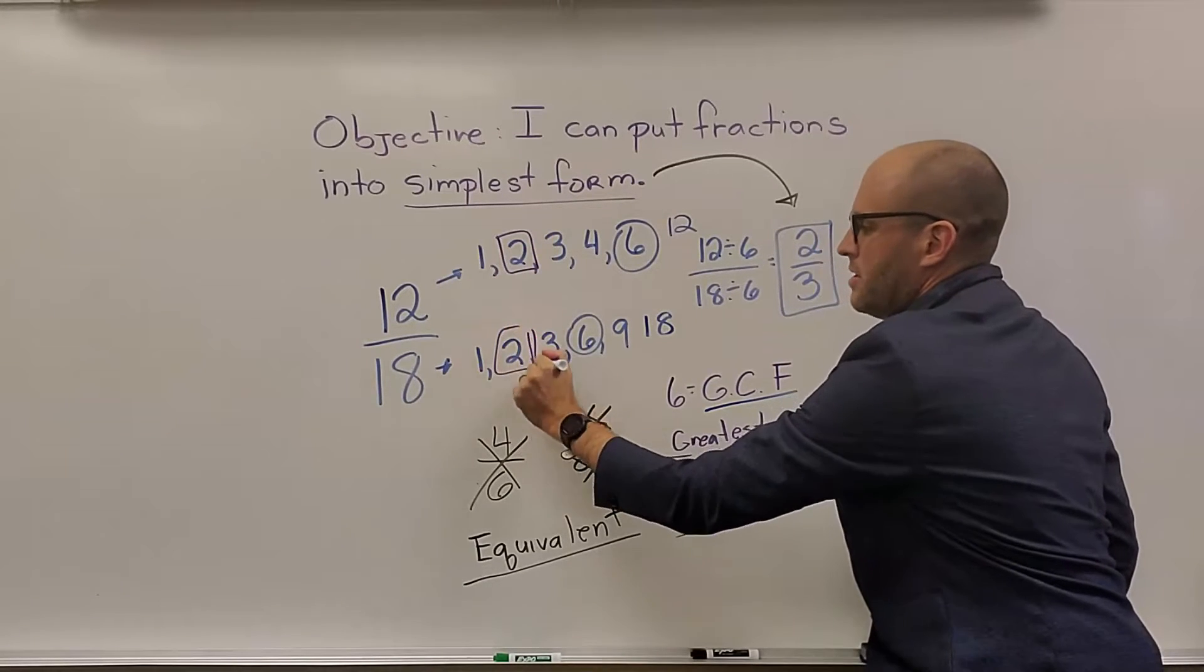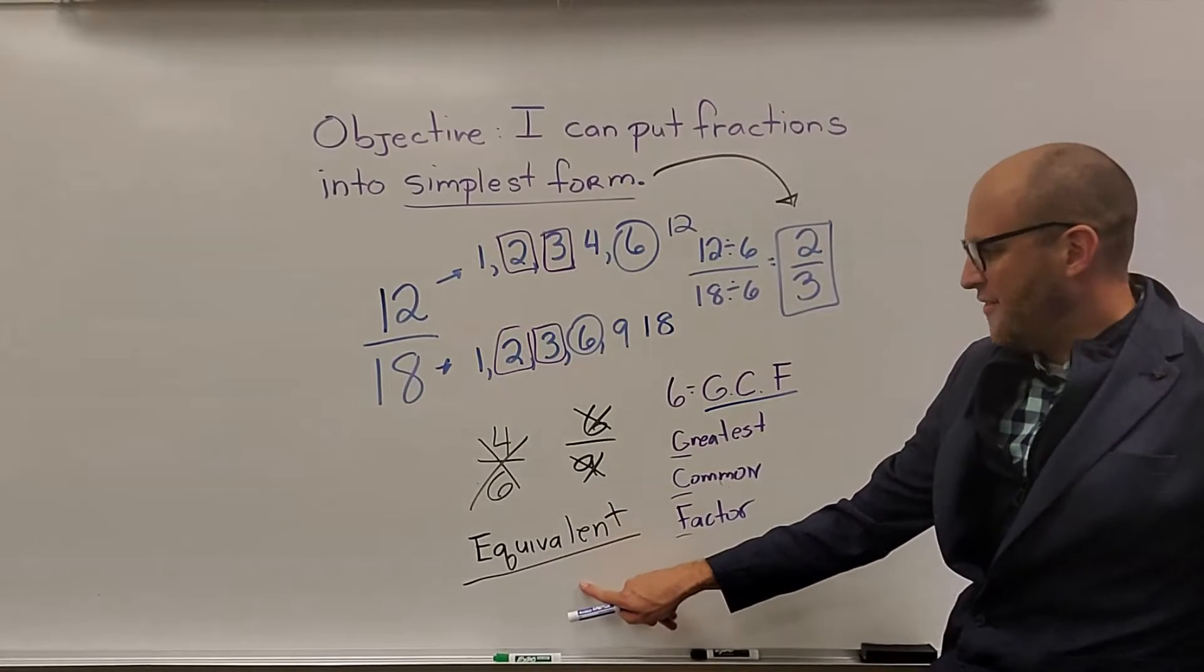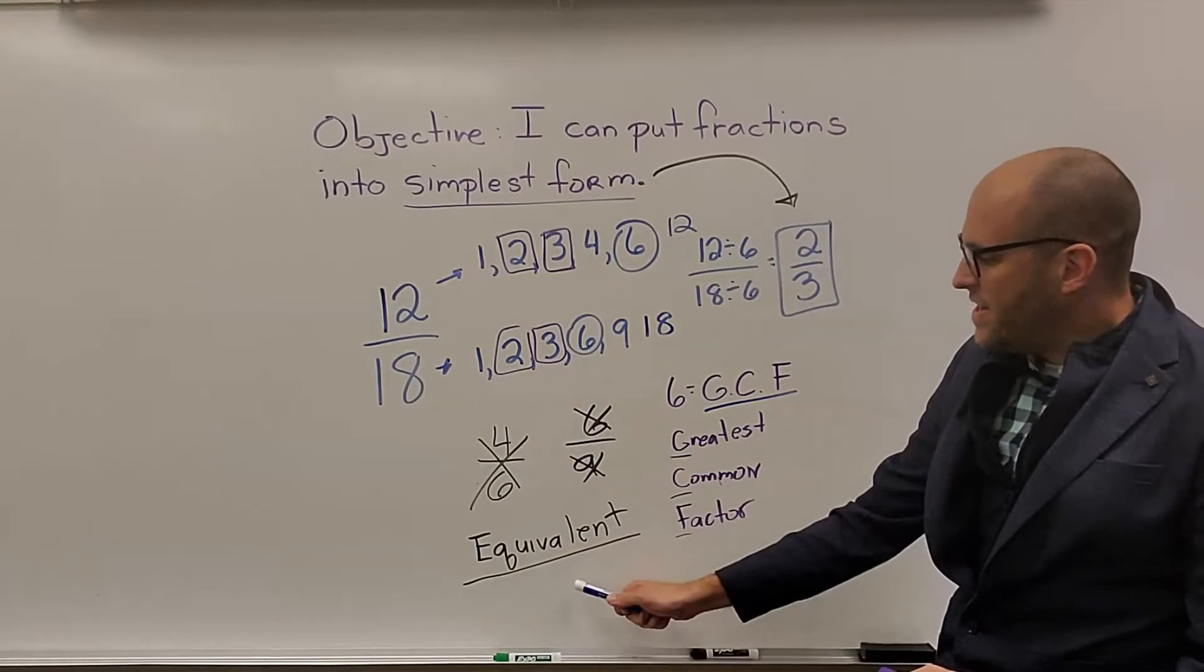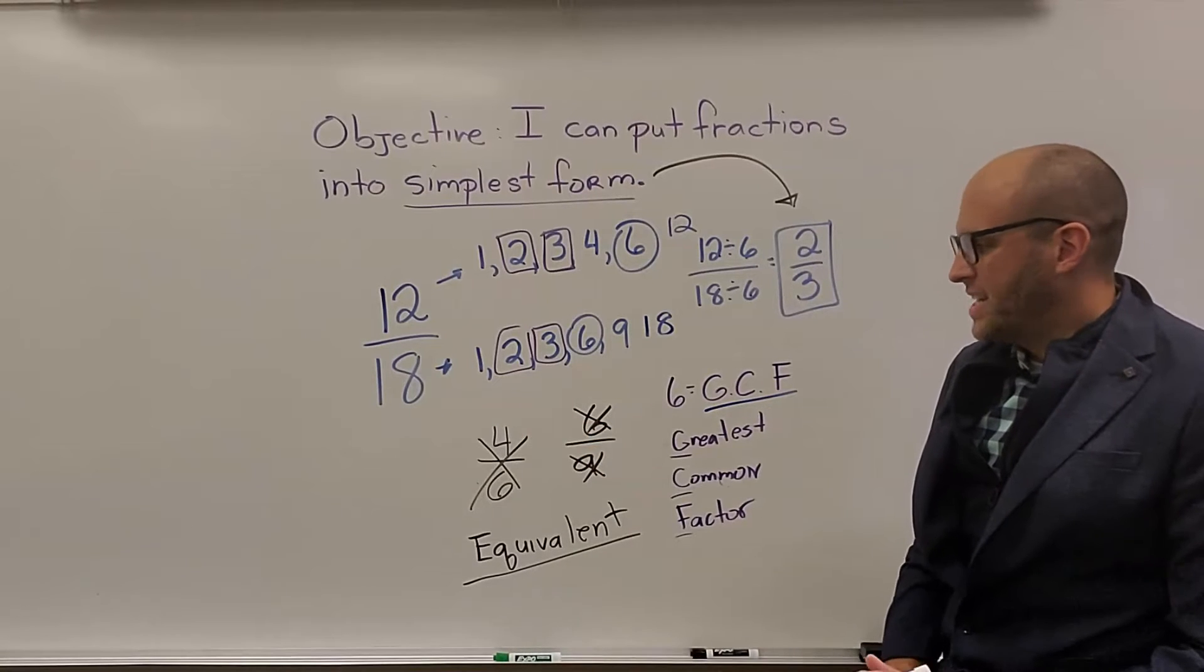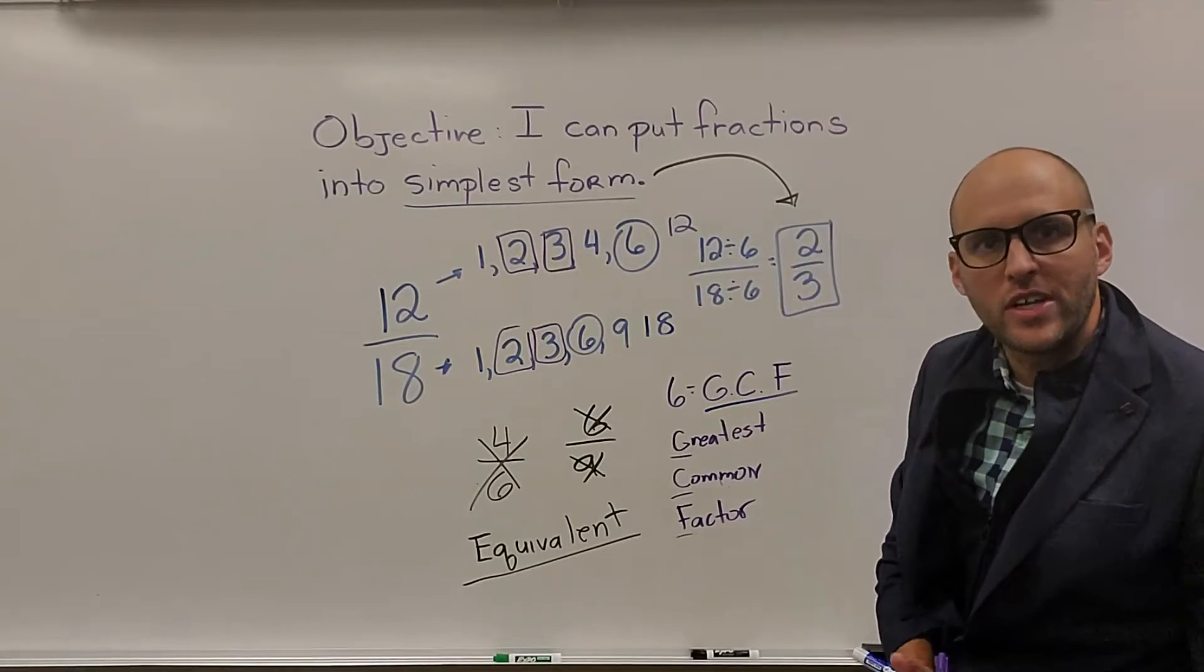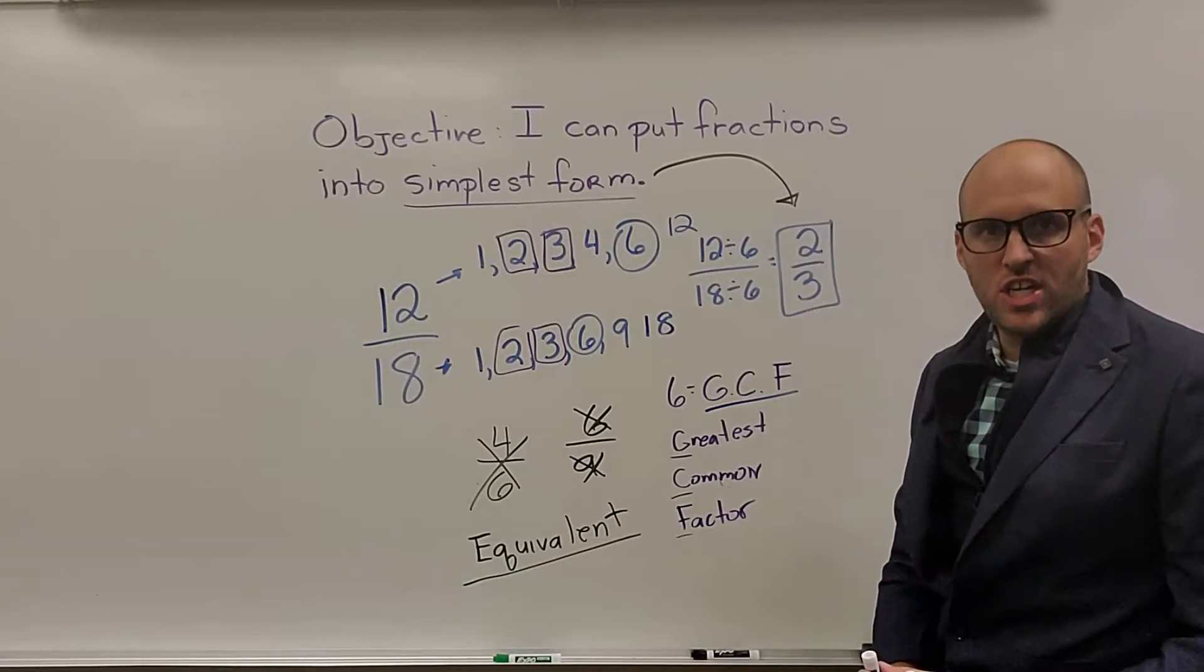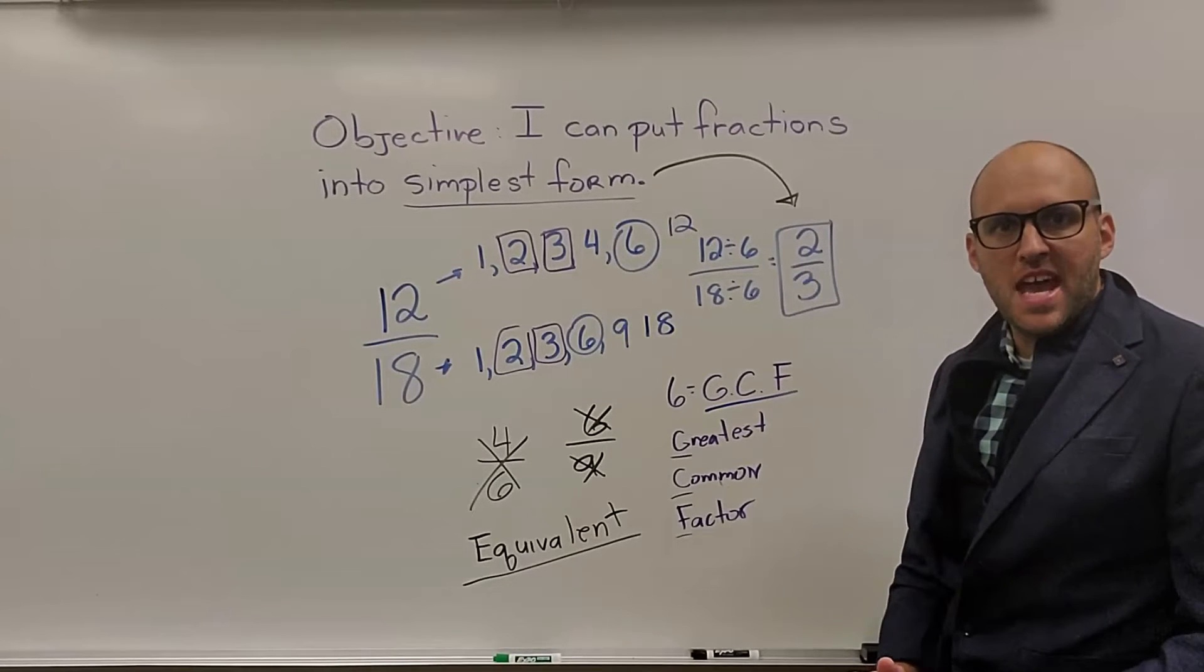Now if you use those numbers, what you're going to end up with is something called an equivalent fraction, 4/6 and 6/9. Equivalent, this means the fractions are equal to 12 over 18. 4/6 and 6/9 are equivalent fractions to 12 over 18. But we're not looking for equivalent here. We're looking for the simplest version of the fraction, which is why we have to find the biggest number they have in common.